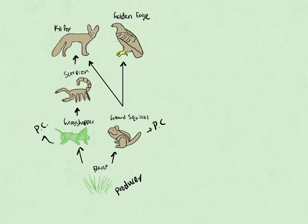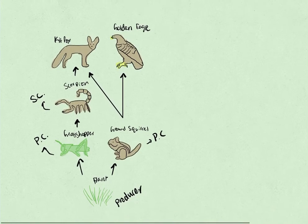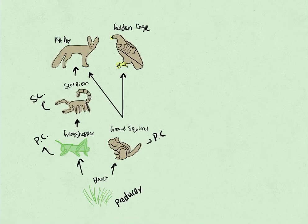Next, we have the scorpion, which feeds off of only the grasshopper in this particular food web. So that means it has to be the secondary consumer. Lastly, we have the kit fox, which eats the scorpion in this case. And we'll talk about what happens when it eats the ground squirrel. So in this case, it's considered the tertiary consumer.